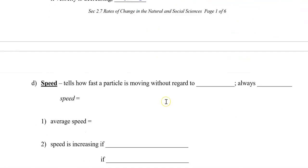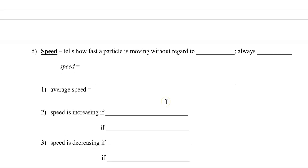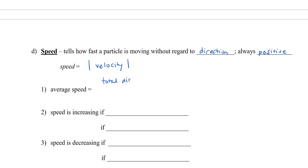There's one more thing we need to take a look at, and that is speed. Speed is different from velocity — it tells how fast a particle is moving without regard to direction, so it's always going to be a positive value. To find the speed, we can take the absolute value of our velocity. The average speed is going to be our total distance divided by our total time.